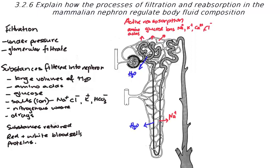In the distal convoluted tubule, we see active reabsorption of sodium and chlorine ions, followed again by osmosis of water. So we see this continuing active reabsorption of ions and then passive movement via osmosis of water.